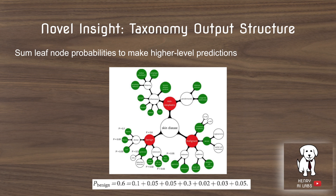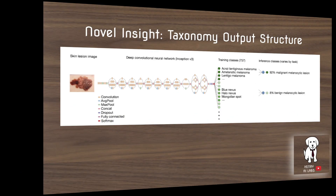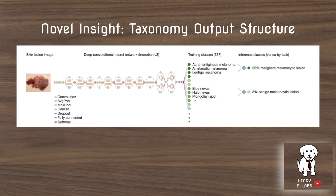Each high-level class — benign, malignant, and non-neoplastic — has its own set of leaf nodes, and interestingly they have different cardinalities. For example, the non-neoplastic node has many more leaf nodes than benign and malignant. The skin lesion image is input into the GoogleNet Inception network, which branches the input into four separate convolutional blocks, aggregates them together, and then maps the result into this taxonomy output space to make predictions.